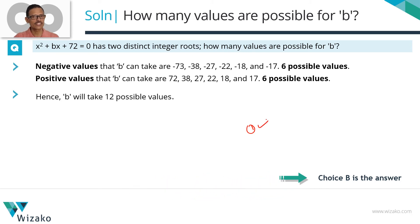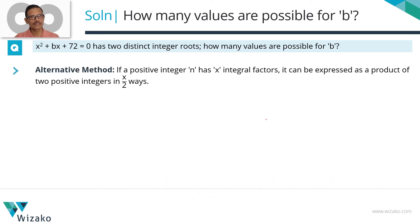To do the second method, we will not be listing. We will be using a little bit of number properties. The first concept is basically this: if a positive integer n has x factors, then the number of ways in which we can express n as a product of two factors is x by 2. For example, if a number has 10 factors, in how many ways can we express that number n as a into b? We can do it in 10 by 2 which equals 5 ways.